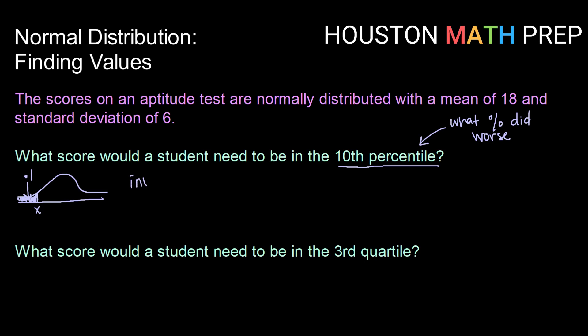So to find this value, we would use our inverse normal distribution. Remember, you've always got to feed it area to the left. In this case, 0.1, your mean of 18,